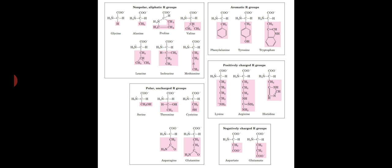The next group is polar uncharged R groups. The R groups of these amino acids are polar and so they are soluble in water, therefore hydrophilic in nature. These amino acids contain functional groups that form hydrogen bonds with water.